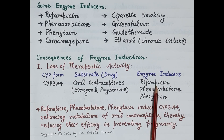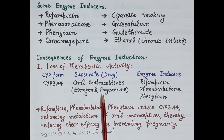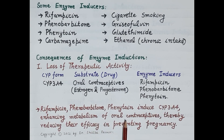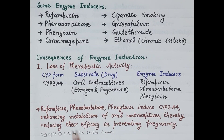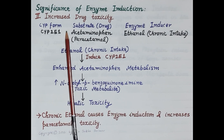If oral contraceptives are administered along with any one of these inducers, say rifampicin, then rifampicin increases synthesis of cytochrome 3A4, and enhanced synthesis of cytochrome 3A4 causes enhanced metabolism of oral contraceptives, thereby reducing their efficacy. So rifampicin, phenobarbitone, and phenytoin induce cytochrome 3A4, enhancing metabolism of oral contraceptives and reducing their efficacy in preventing pregnancy. This is an example of enzyme induction resulting in loss of therapeutic activity.